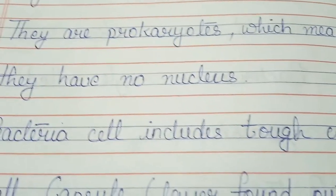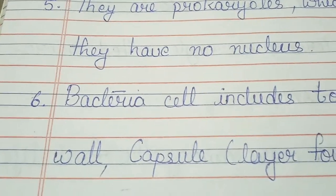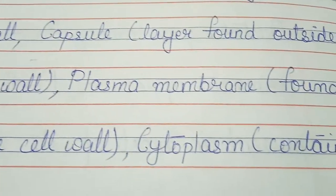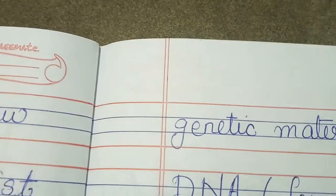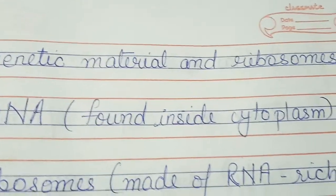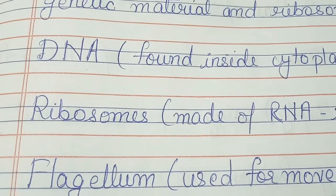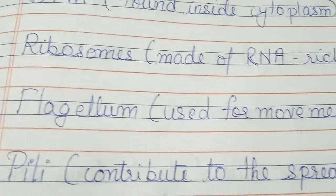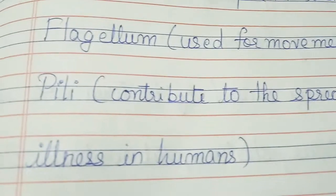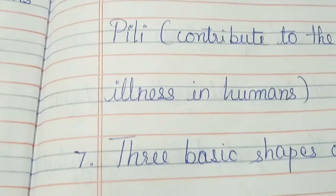A bacteria cell includes tough cell walls; a capsule, which is a layer found outside the cell wall; a plasma membrane found inside the cell wall; cytoplasm, which contains genetic material and ribosomes; DNA found inside the cytoplasm; ribosomes made of RNA-rich granules; a flagellum used for movement; and pili, which contribute to the spread of illness in humans.